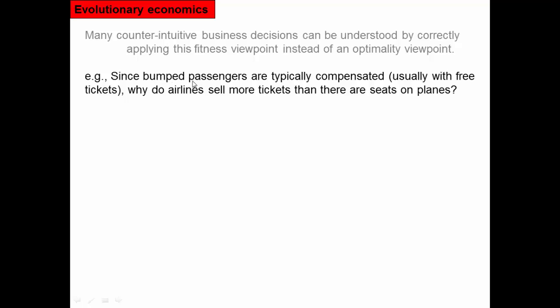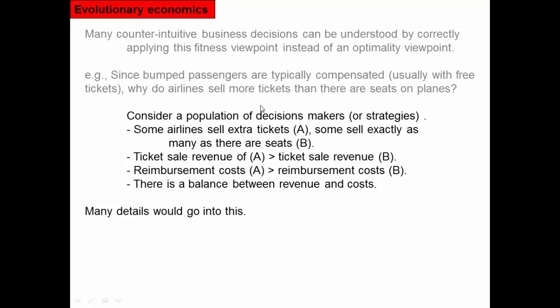In airlines, bumped passengers are kicked off planes and compensated with free tickets or hotel stays. So why do airlines sell more tickets than there are seats? From one perspective it makes no sense — why sell more tickets than seats, especially if you have to pay people when everybody shows up? Think about a set of strategies: some airlines sell extra tickets, some sell only as many as they have seats. The first airline makes more money but also has higher reimbursement costs. Whether Strategy A is better than B depends on balancing revenue against reimbursement costs — similar to how we thought about kin selection, where benefits to relatives versus costs to the individual was central to the rationale.